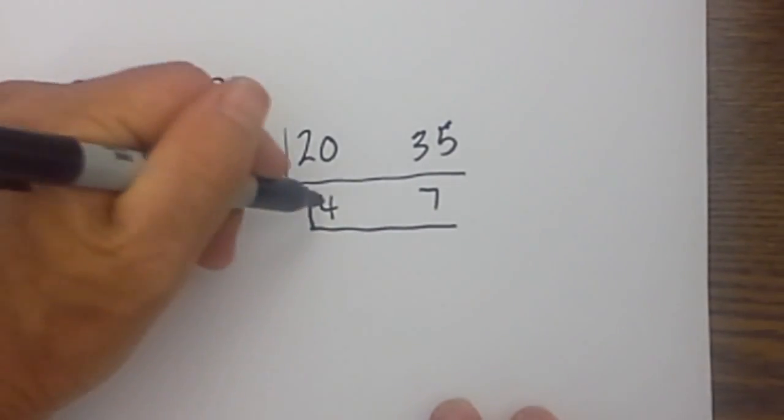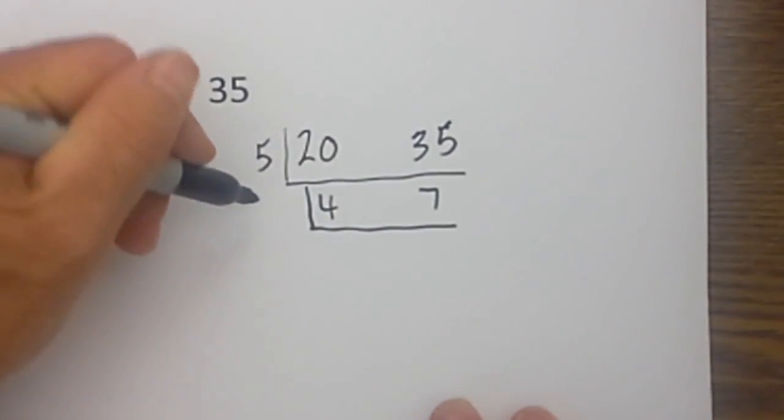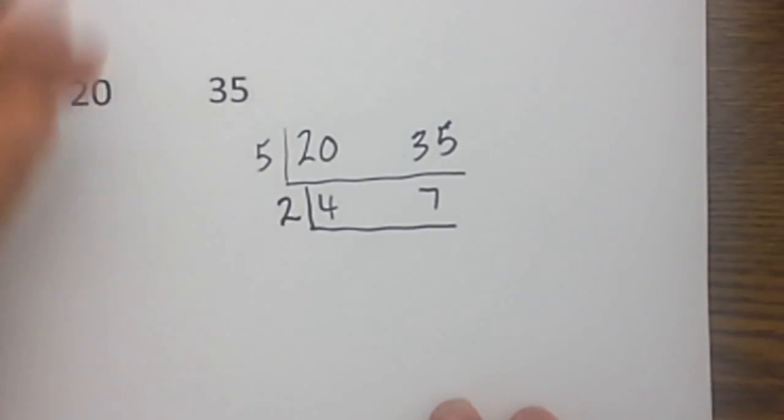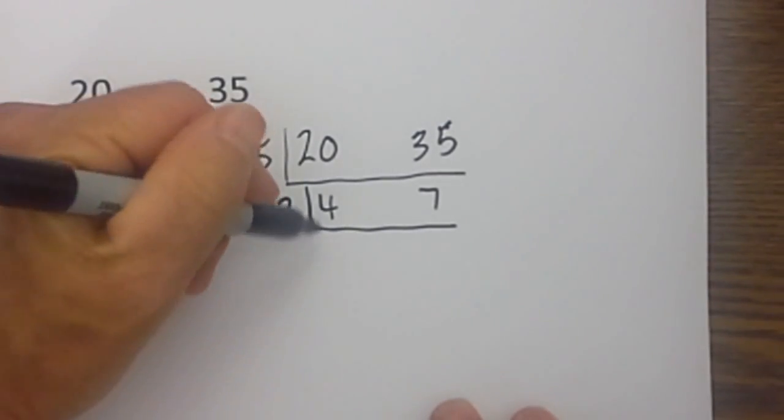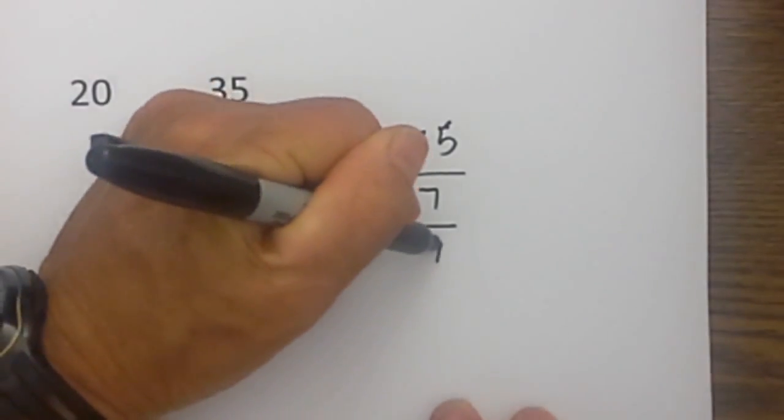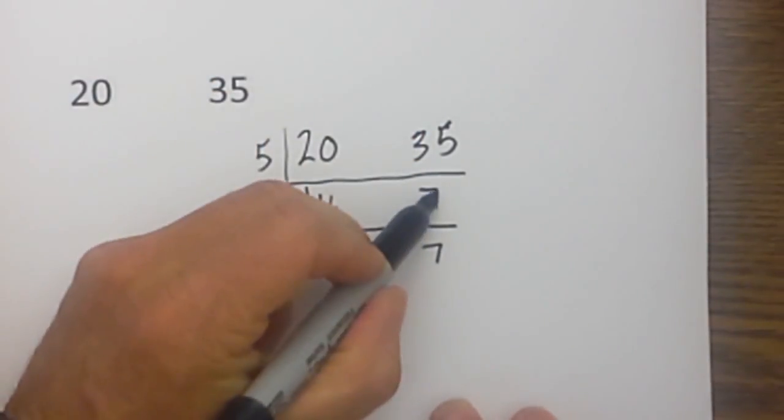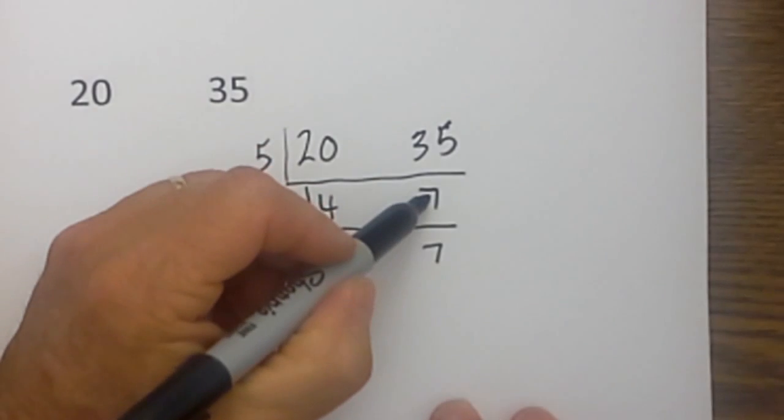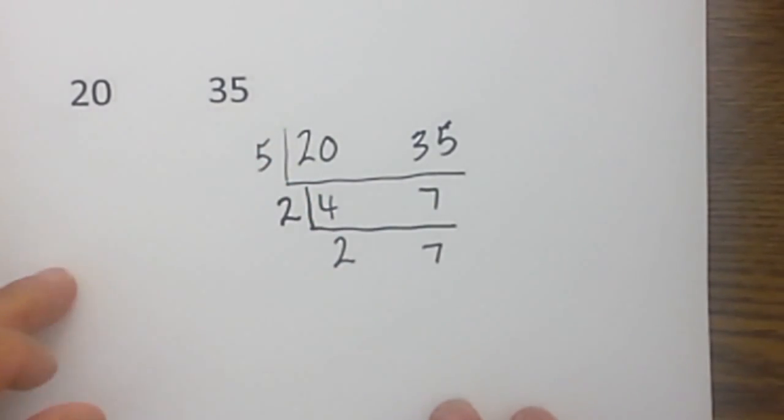The next number is 2. Now 2 will not go into 7 but it will go into the 4, so I write the 2 because 2 is prime. So 2 goes into 4 two times and into 7 it does not divide properly so I will bring the 7 down.